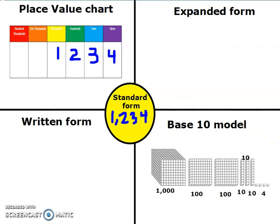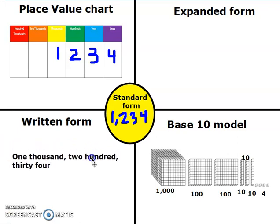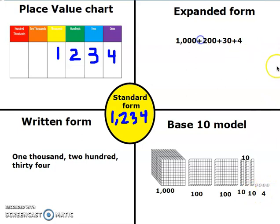So I have 1,234 — that's my standard form. And thinking about my standard form, that helps me with my written form, because my written form says one thousand two hundred thirty-four. For my expanded form, I would have 1,000, and then I added two hundreds. So that means 1,000 plus 200 plus 30 plus 4. So my expanded form would be 1,000 plus 200 plus 30 plus 4.